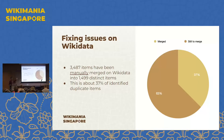By querying where there are multiple GeoNames IDs — meaning items that have been merged, each having a single GeoNames ID merged into a single Wikidata item — that's given me an idea of how many have been done. As you can see, we're only just over a third: 37% have been merged, with still about 63% to go.